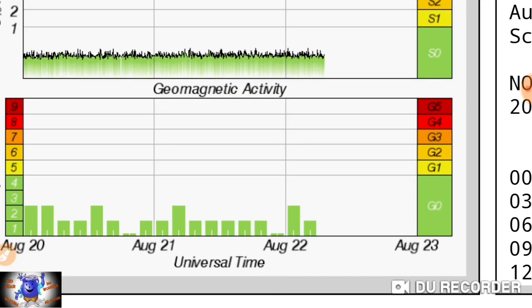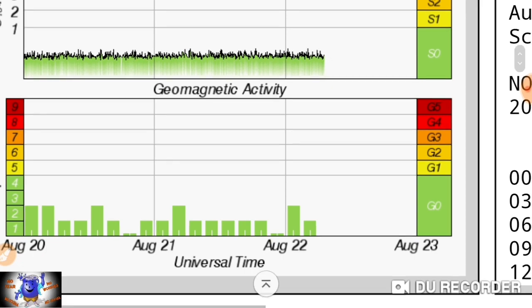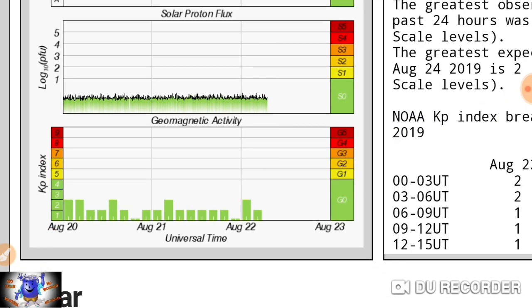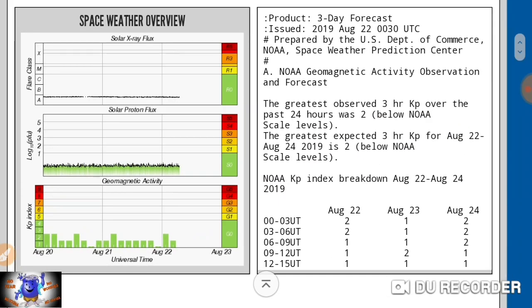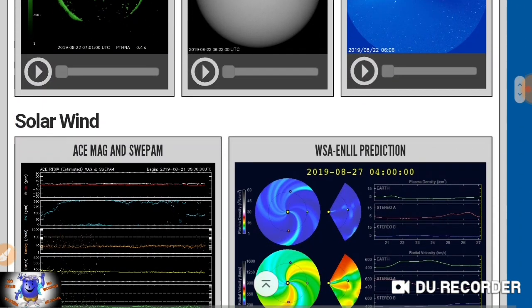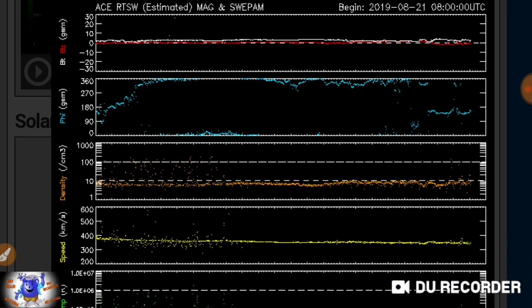KP index, nothing out of the ordinary there. It's our geomagnetic storm levels, our activity. It's not even in the active range. It has to get up to five to be a minor storm. Not even close. Why am I even talking about this? Well, this is why.